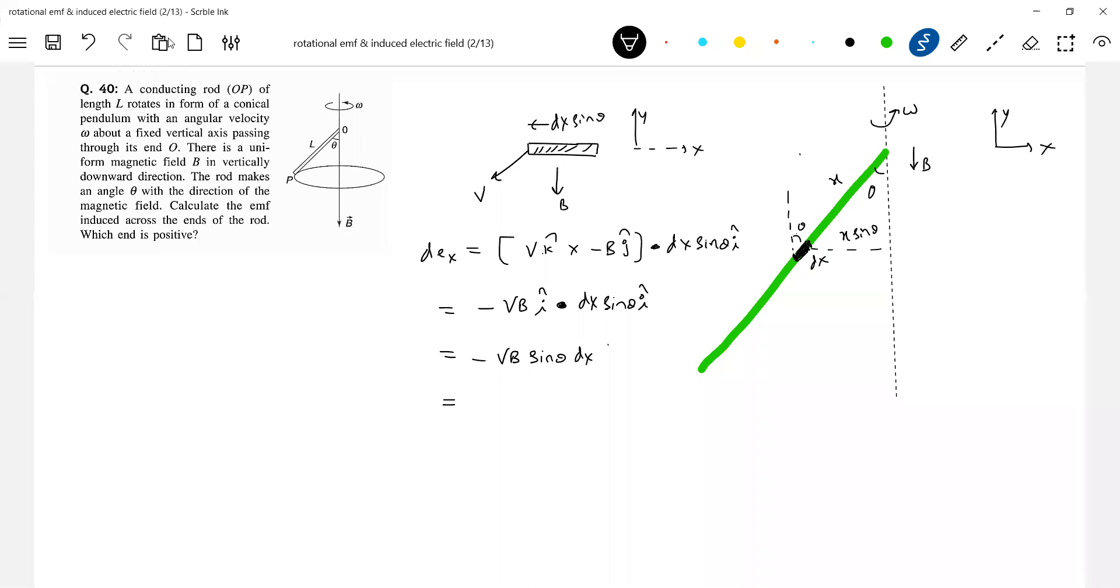Now, what is V? Tangential velocity. This should be equal to x sine theta into omega, B sine theta dx. This everything should be equal to B omega sine square theta x dx.